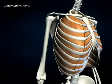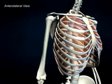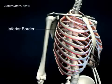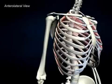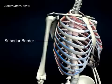The origins of the internal intercostals are from the inferior borders of the ribs and costal cartilages above. The fibers pass inferiorly and posteriorly to insert onto the superior borders of the ribs and costal cartilages below.